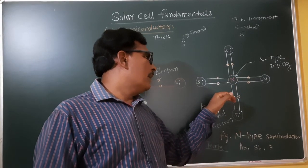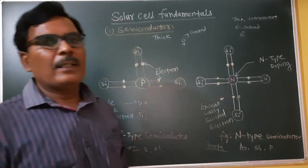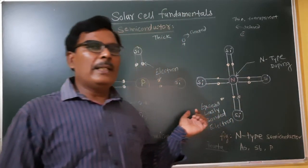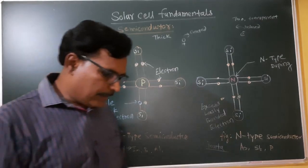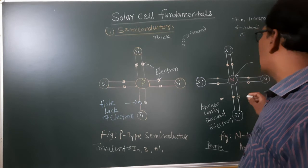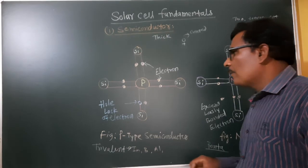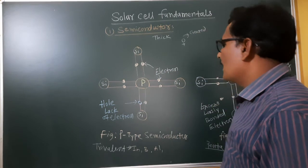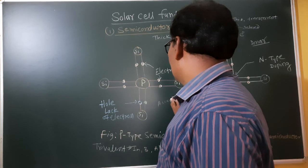With pentavalent impurities, four bonds are formed with neighboring atoms, but there are two excess loosely bound electrons. In N-type semiconductor, there are more electrons, so it donates electrons and is called a donor. P-type semiconductor requires one electron to complete the crystal structure and is called an acceptor.